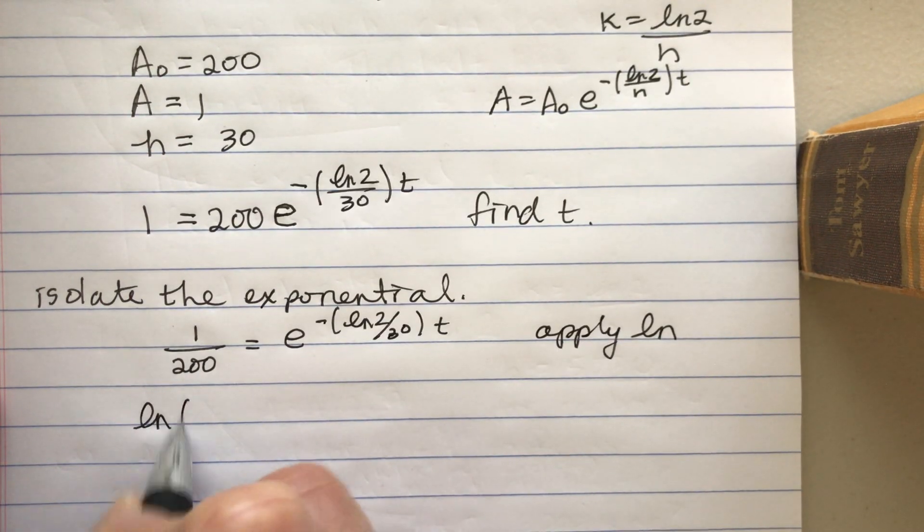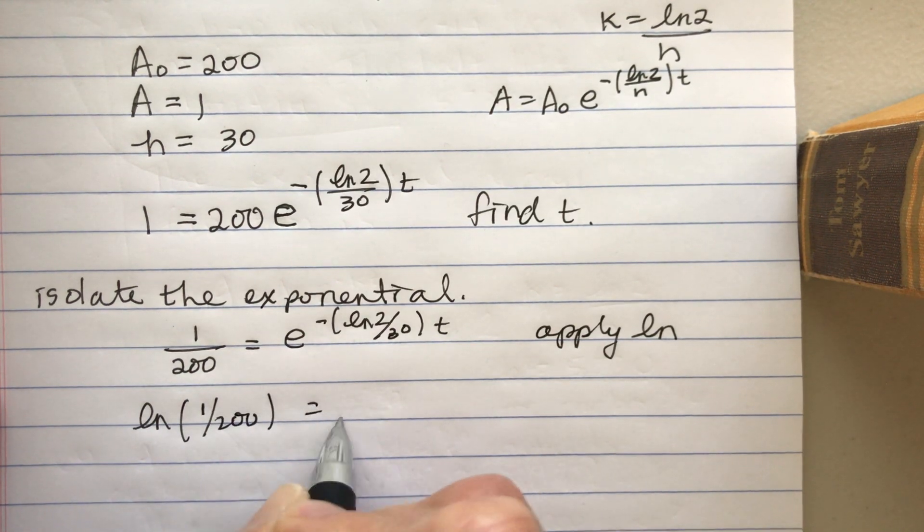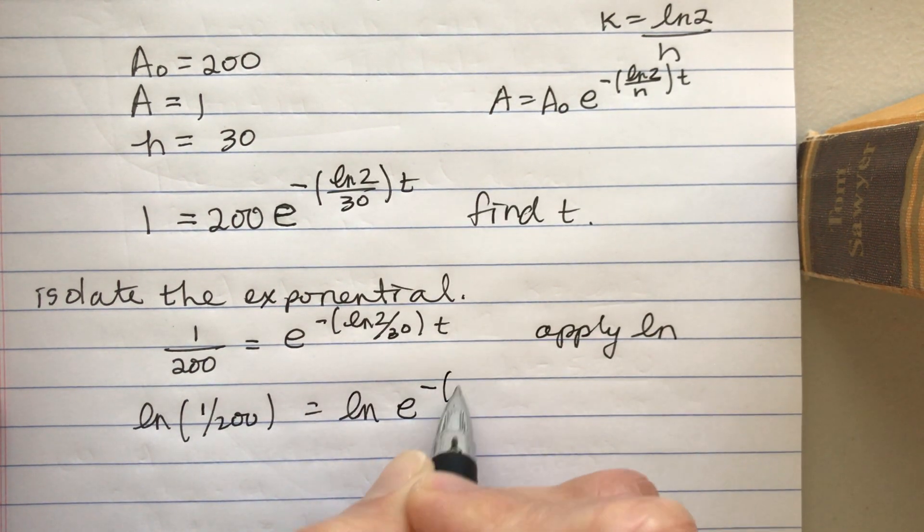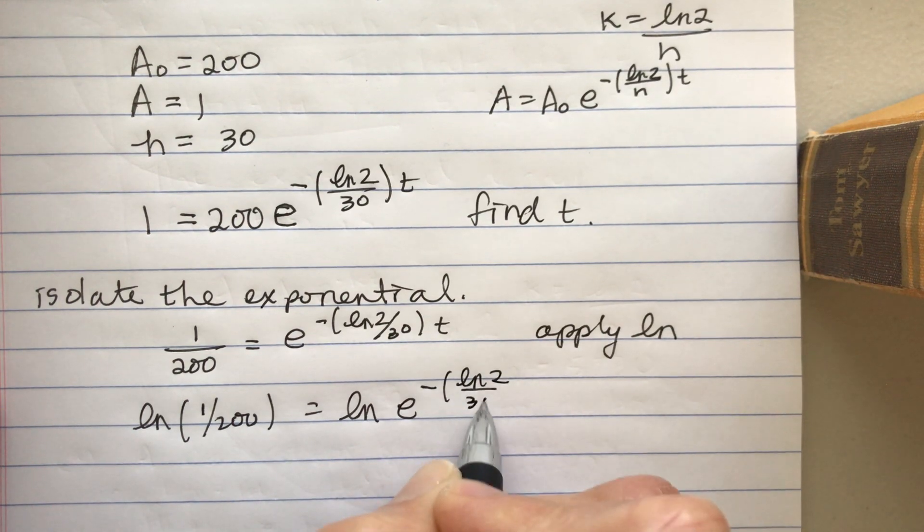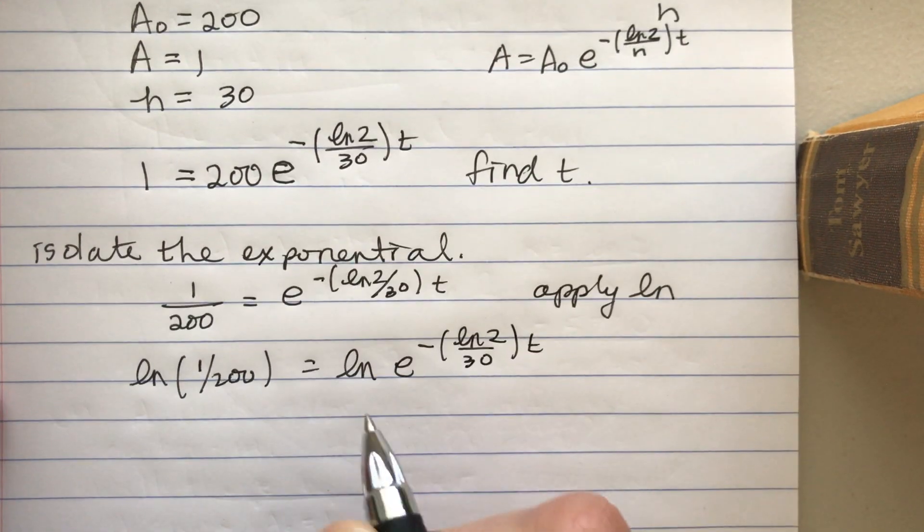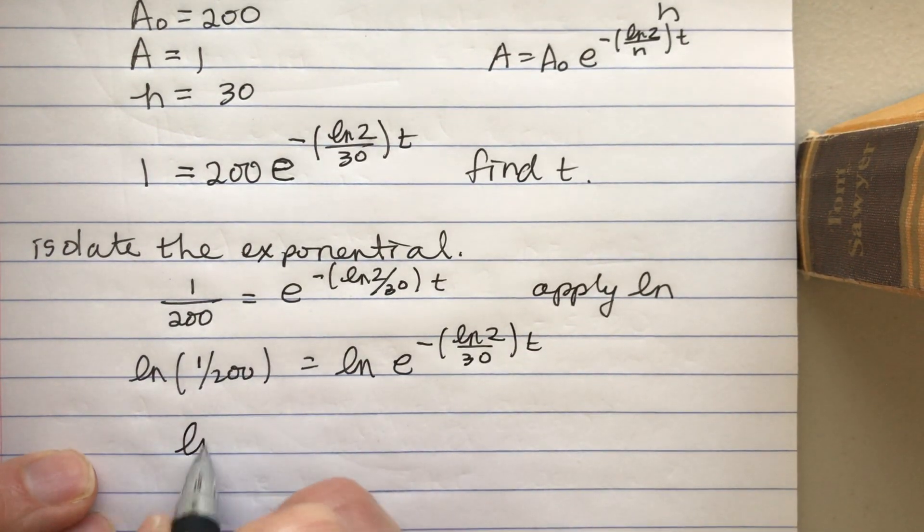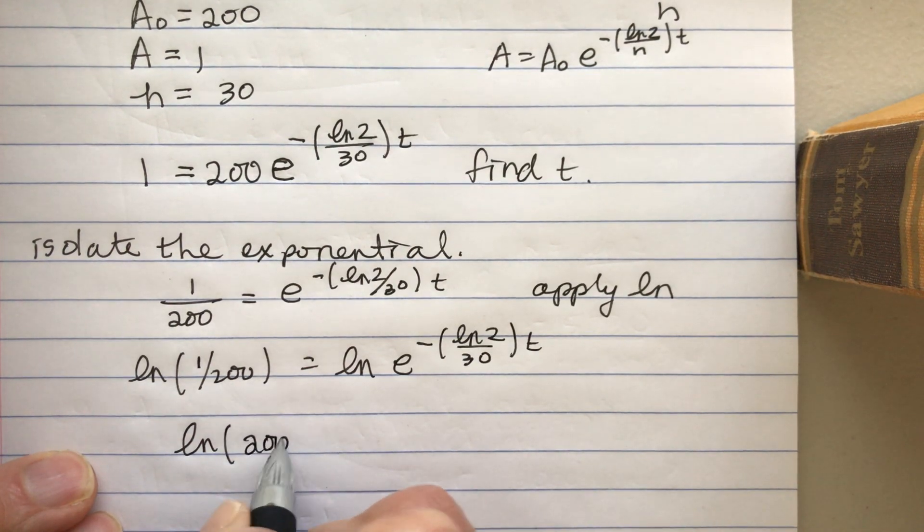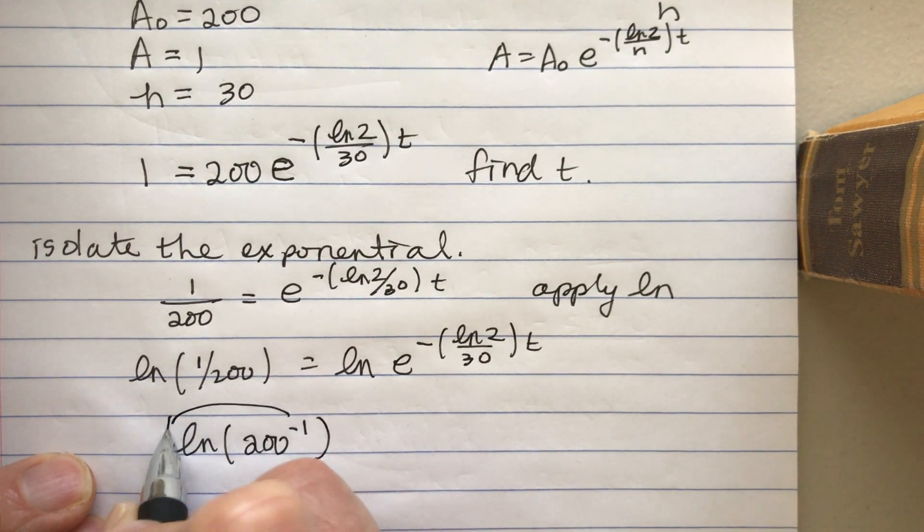So ln(1/200) = ln(e^(-(ln2/30)t)). ln and e cancel out. By the way, this is also ln(200^-1) and that minus 1 can be brought to the front. So these ln and e cancel out.